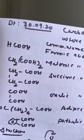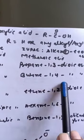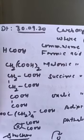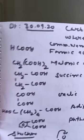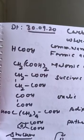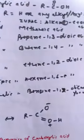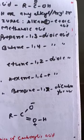Similarly, for succinic acid, the IUPAC name is butane-1,4-dioic acid. And for oxalic acid, ethane-1,2-dioic acid. For adipic acid, hexane-1,6-dioic acid. And for phthalic acid, benzene-1,2-carboxylic acid.